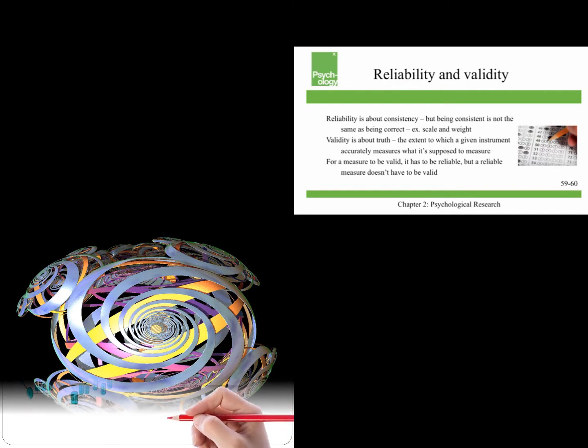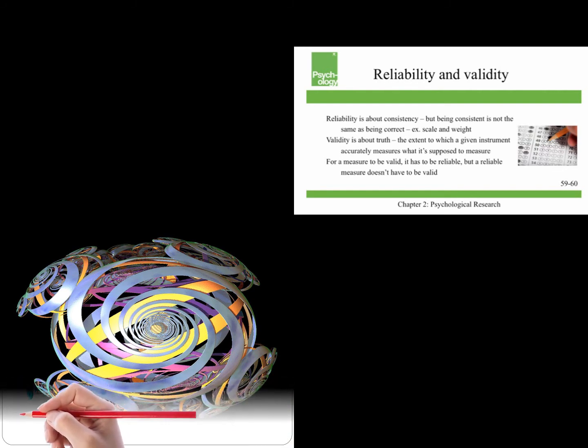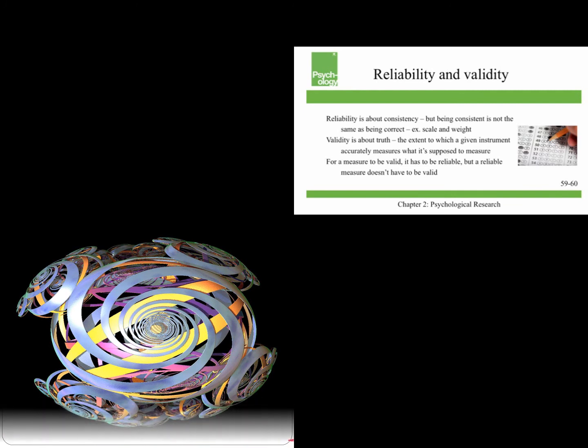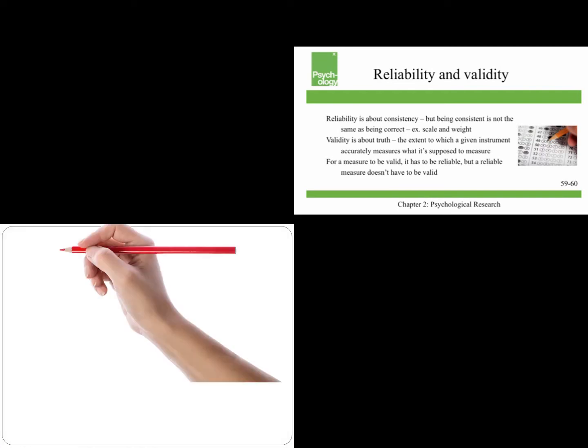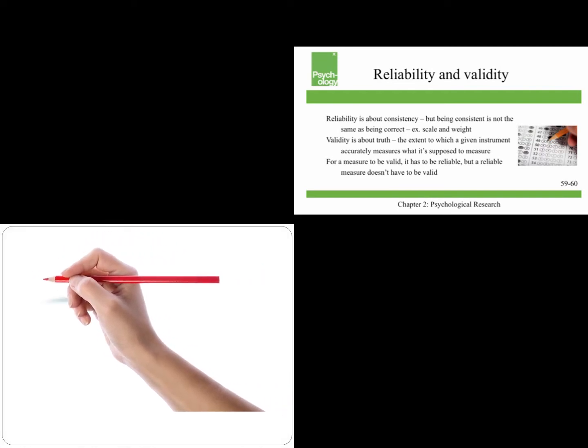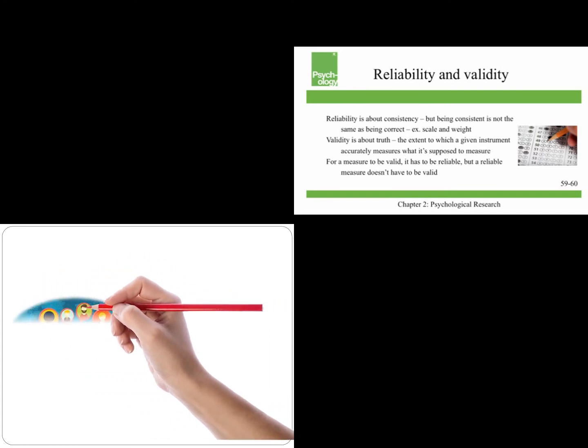Validity is all about truth. So the extent to which a given instrument accurately measures what it's supposed to measure is its validity. For a measure to be valid, it has to be reliable. But like I said before with weight, a reliable measure doesn't have to be valid. So a legitimate question to ask is, do the ACT and SAT correctly measure scholastic aptitude? Are they reliable and valid measures?